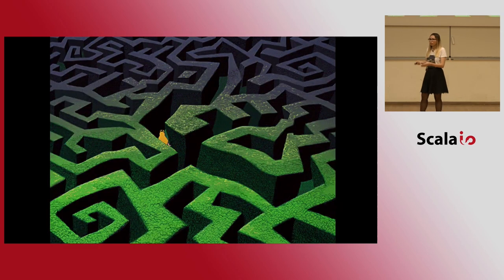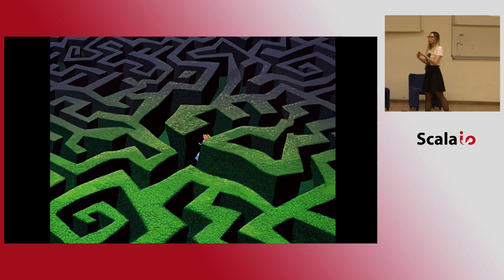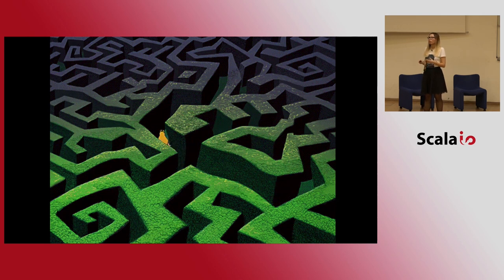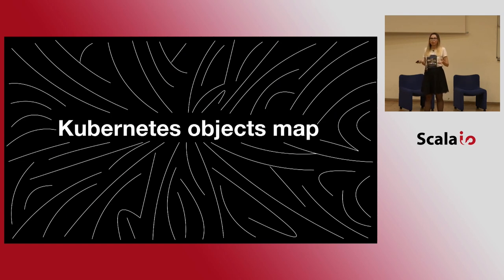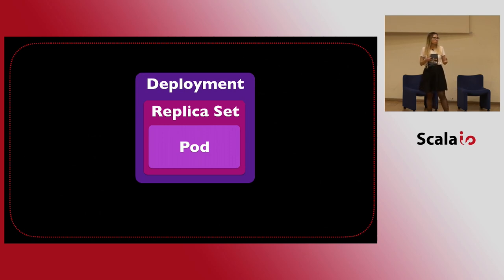For Alice it reminded her of a labyrinth — when you step in you don't know what lies ahead, and step by step you figure out how everything works. What helps in a labyrinth is a map, and in this city there is a Kubernetes objects map containing around 50 kinds of volumes and other objects. There are simplified versions too — Alice already knew about pods, replica sets, and deployments.